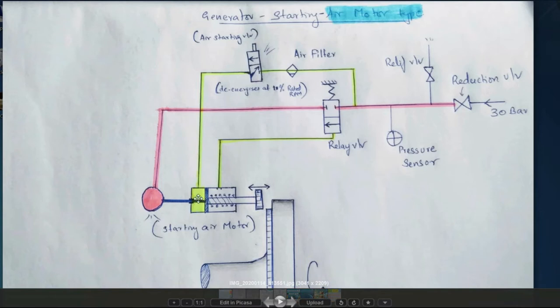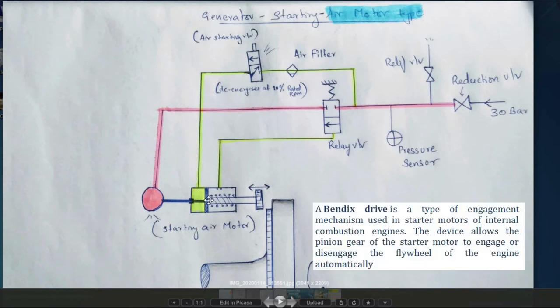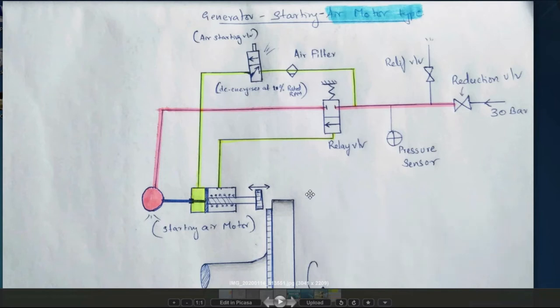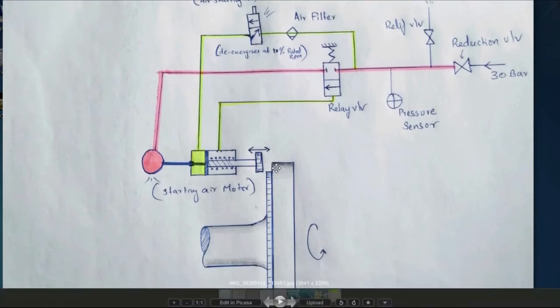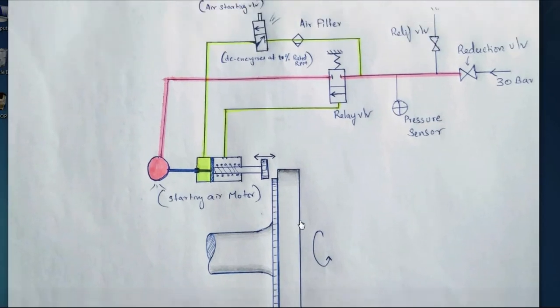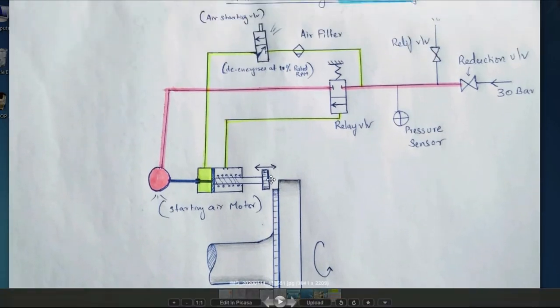To the cylinder. And this one pushes this piston to this side. So what happens? This is a pinion here. And this one engages onto the gear of the tooth of the flywheel. And when this one moves here and engages, at that time, this one also moves here. It is connected.